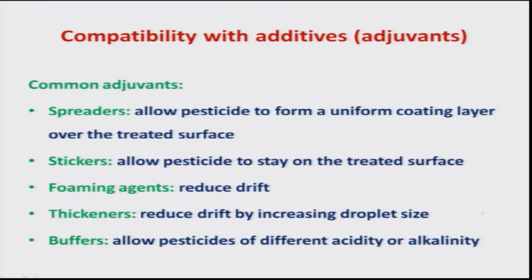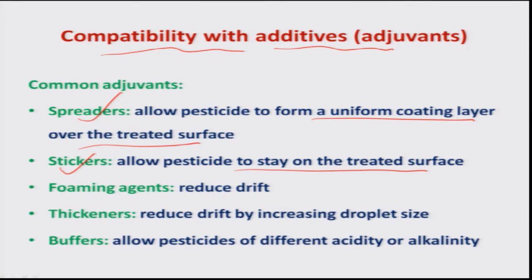Another important knowledge is the compatibility of insecticides with adjuvants or additives. Commonly used adjuvants include spreaders, which allow the pesticide to form a uniform coating on a leaf surface; stickers, which allow the pesticide to stay on the treated surface for a long time; foaming agents, which reduce drift under field situations; thickeners, which also reduce drift by increasing droplet size during spraying; and buffers, which allow insecticides to remain effective when mixed with acidic or alkaline water.